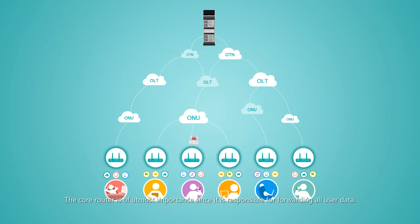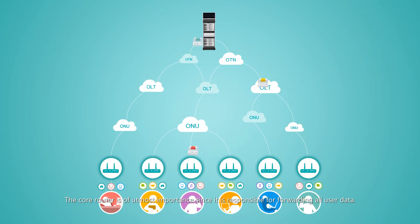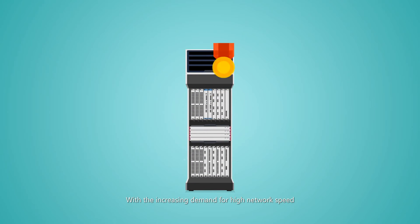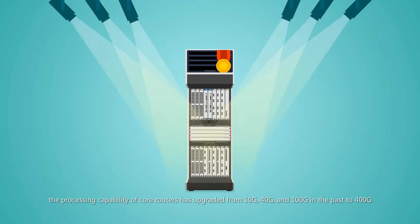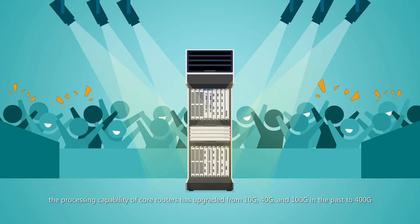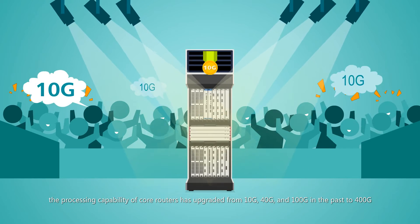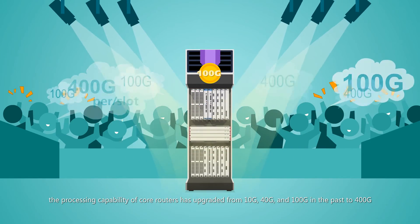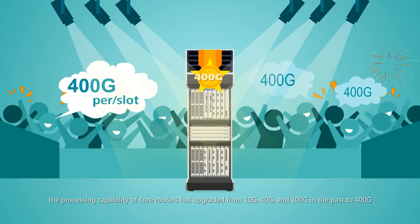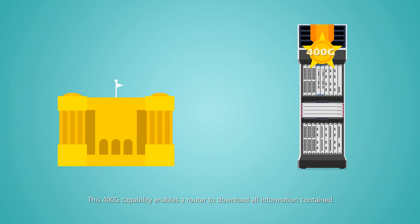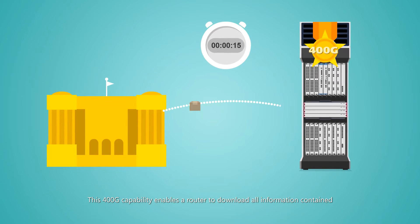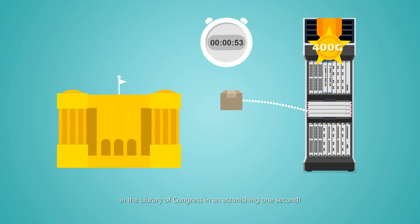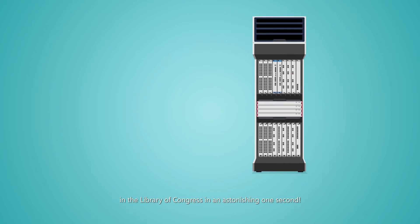The core router is of utmost importance since it's responsible for forwarding all user data. With increasing demand for high network speed, the processing capability of core routers has upgraded from 10GB, 40GB, and 100GB in the past to 400GB. This 400GB capability enables a router to download all information contained in the Library of Congress in an astonishing one second.